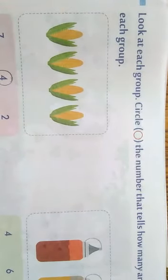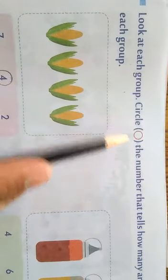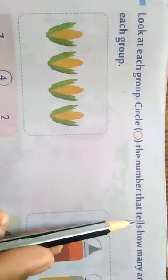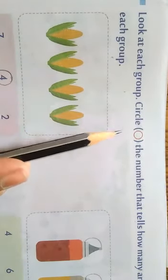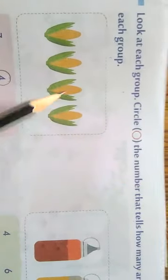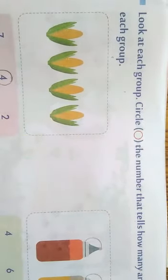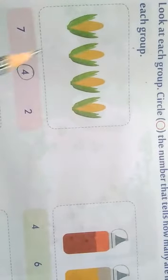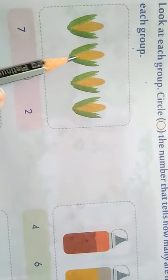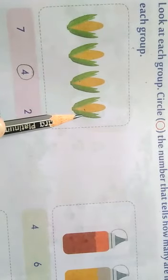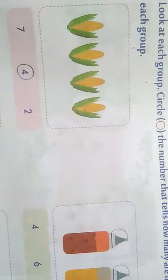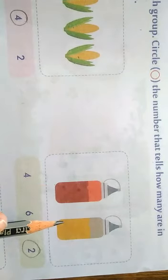Our next question: look at each group and circle the numbers that tell how many are in each group. You have to put a circle on the number that matches the count of items in the group. Look at the first picture: 1, 2, 3, 4 — so we circle 4. Look at the second picture, first count the item: 1, 2 — so we circle 2.